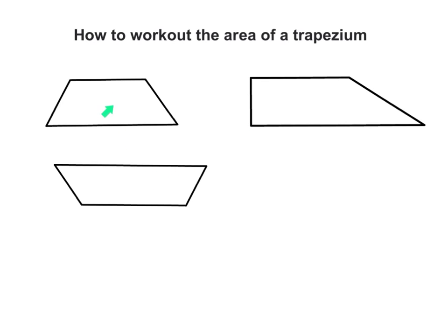Here we have some examples of trapeziums. How do we work out the area of a trapezium? First of all, we need to understand what is a trapezium. A trapezium is any four-sided shape which only has one pair of parallel sides. So only one pair of parallel sides. This shape here is a trapezium because it has four sides and only one pair of parallel sides.